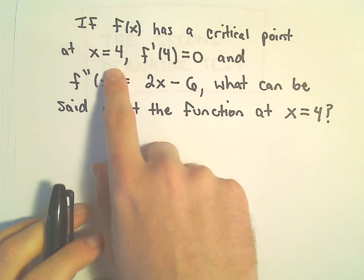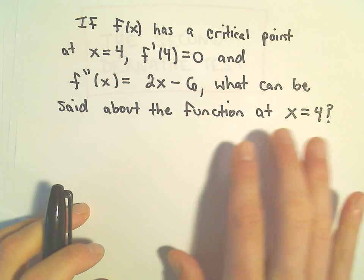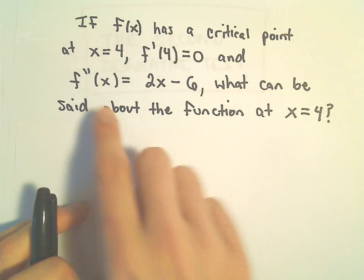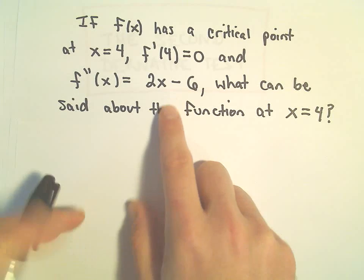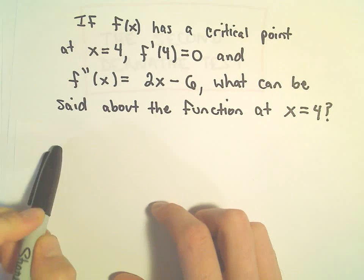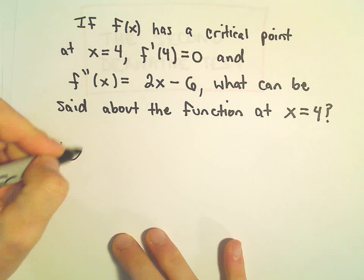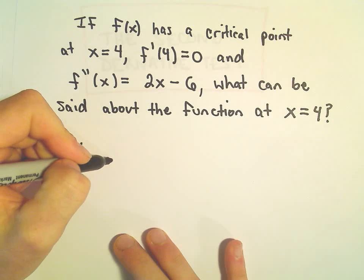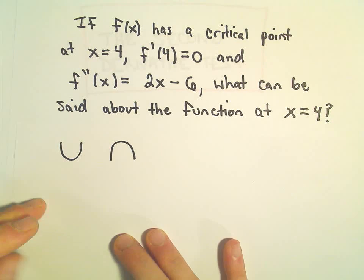So again, the idea is if we've got a critical point and the derivative is 0, well, if the second derivative is positive, that would make it concave up and then we would have a minimum. If the second derivative is negative, that's going to make it concave down and we have a maximum.